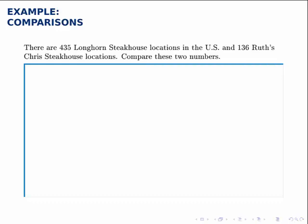Again, this is stated vaguely, but we'll illustrate a number of ways that we can compare two numbers. The simplest way is just to find the difference between them. So if we take 435 minus 136, we find that there are 299 more Longhorn locations than Ruth's Chris.